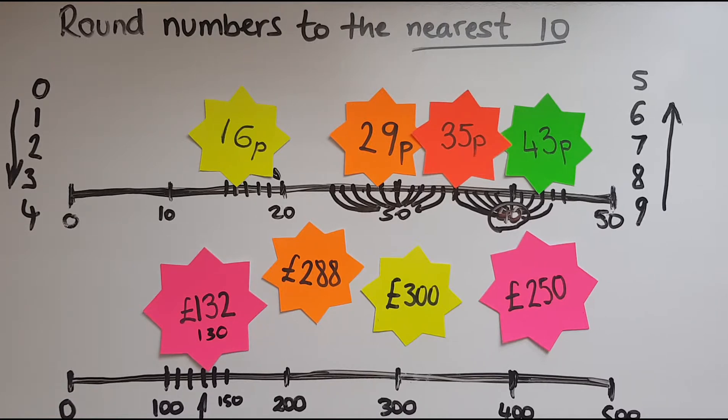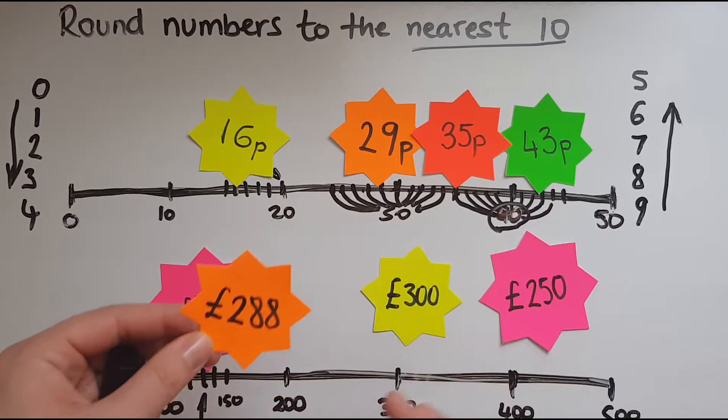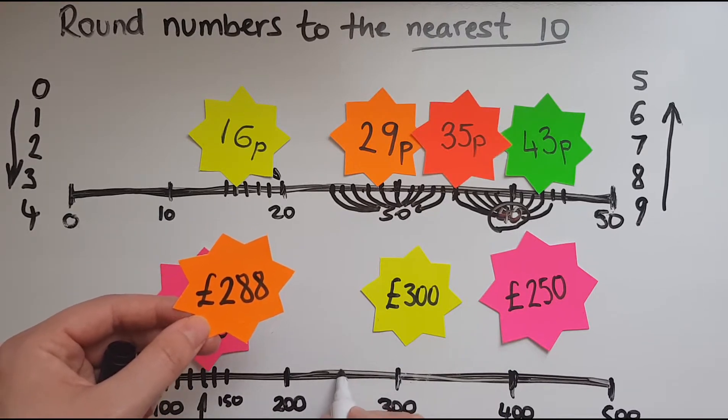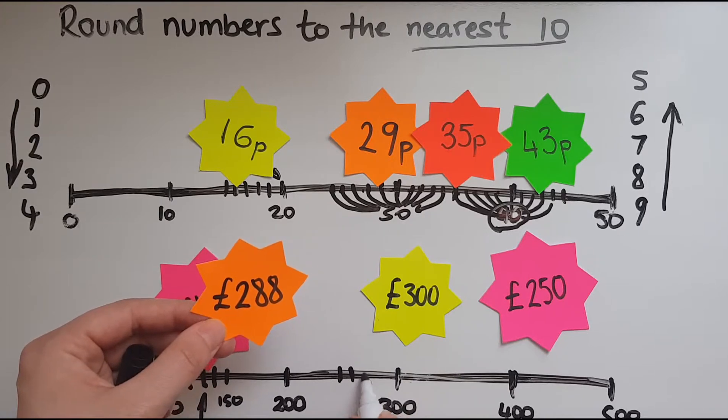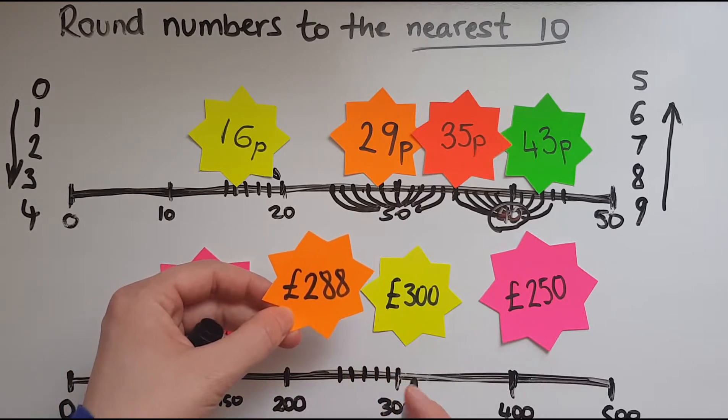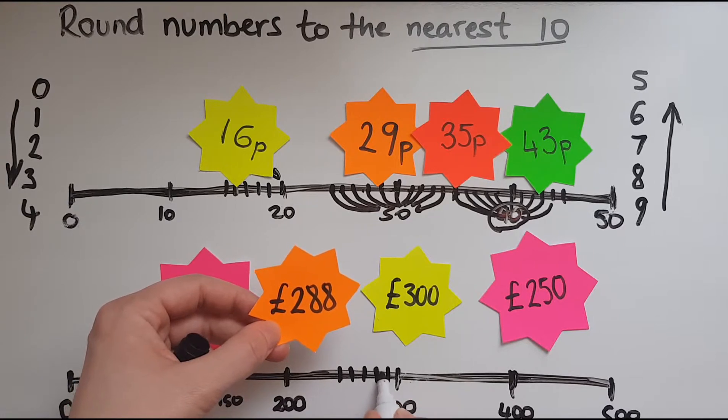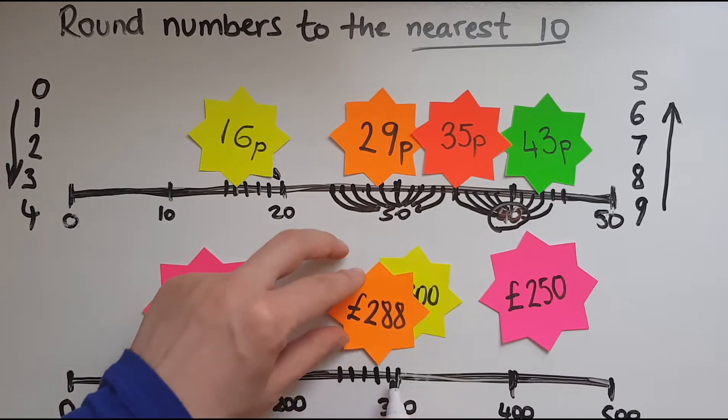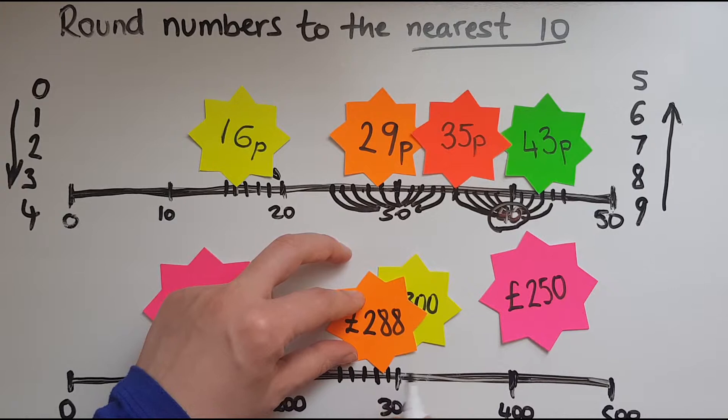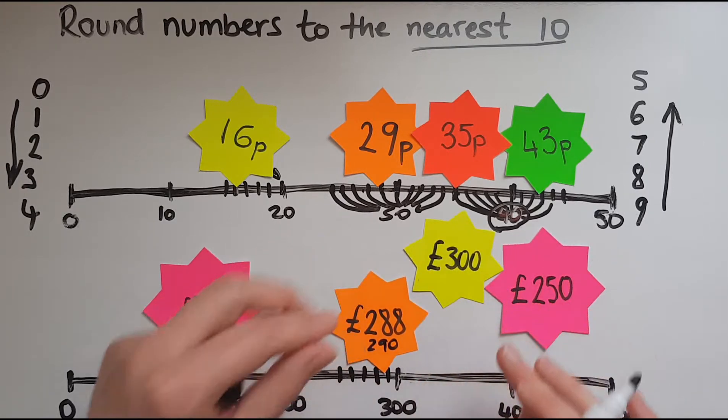Let's have a look at 288. Now 288 stands between 200 and 300. There is 250, 260, 270, 280, 290 and 300. 288 stands between 280 and 290. Is it halfway through? Is it 285 or more? It's actually more than that. So it's closer to 290. So I will write 290 underneath that.